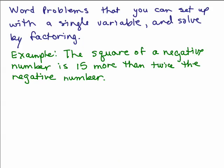We're going to take word problems that you can set up using a single variable and solve by factoring. So for example, here's a word problem. The square of a negative number is 15 more than twice the negative number. Find the number.